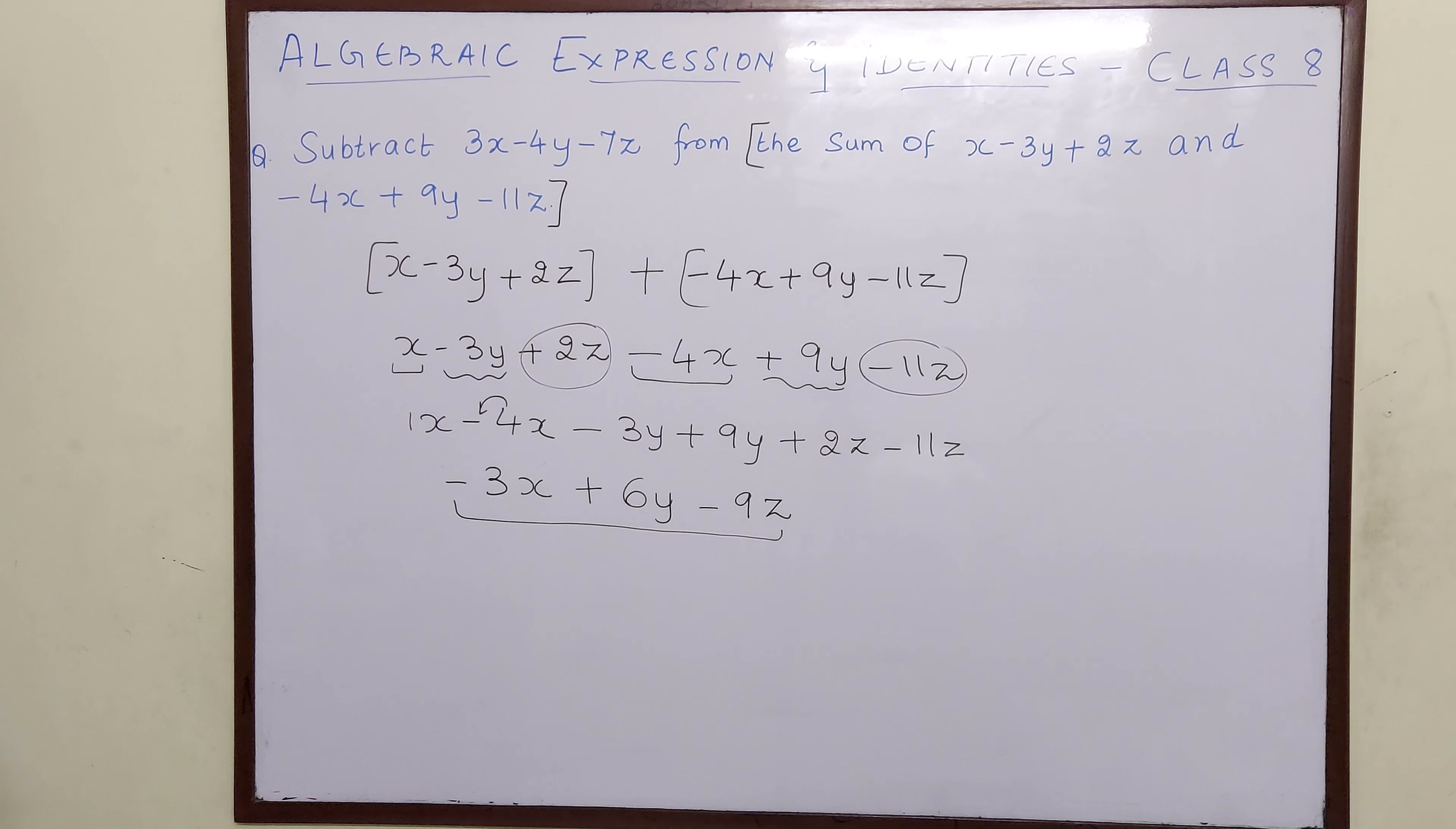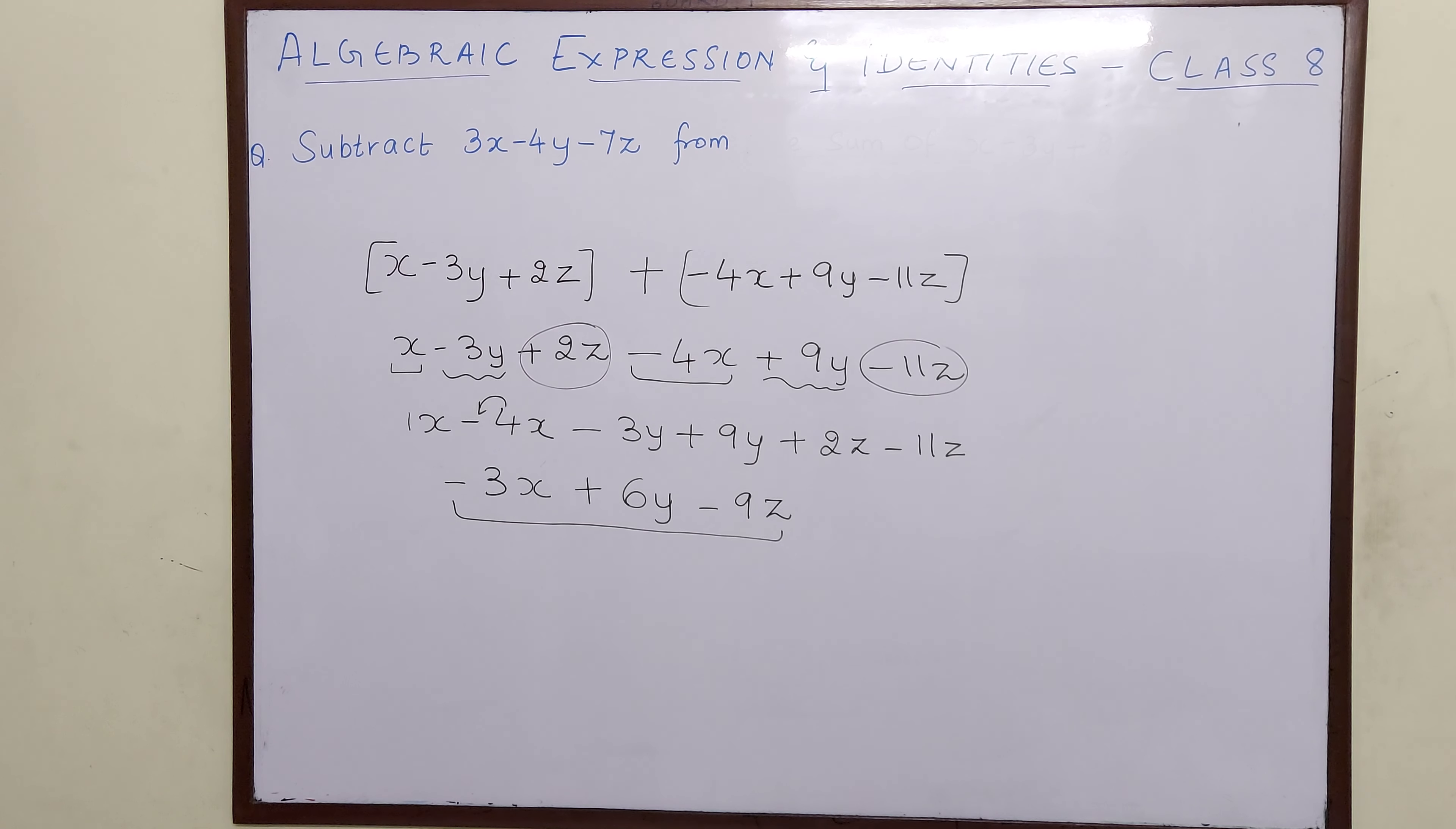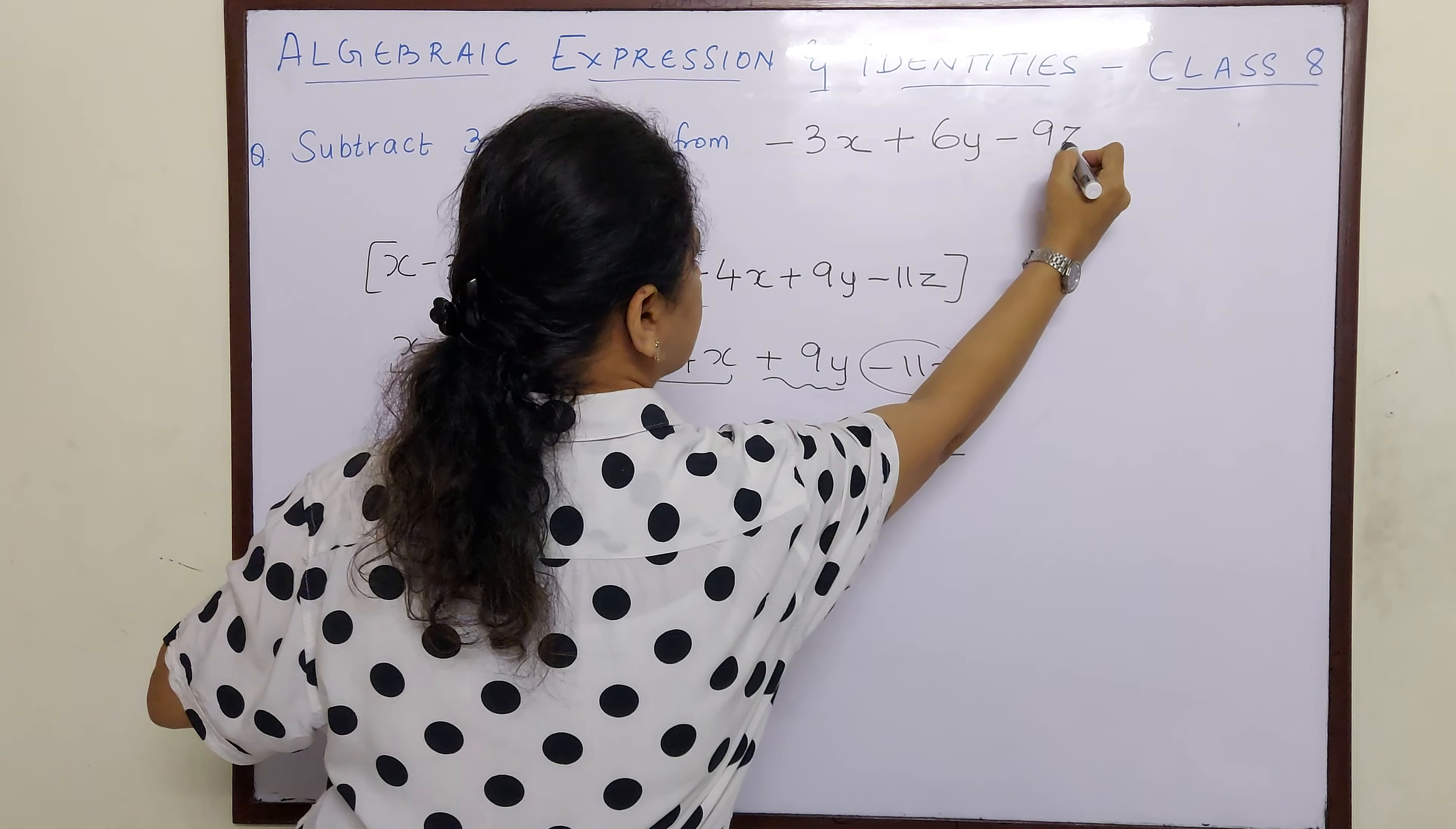So now I can just remove this. I have found the answer for the sum, and what is this? That is minus 3x plus 6y minus 9z.